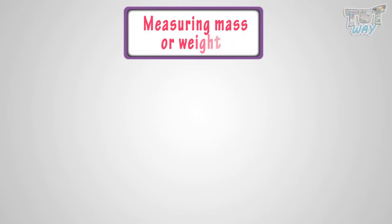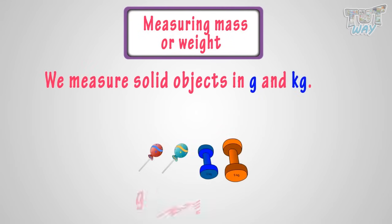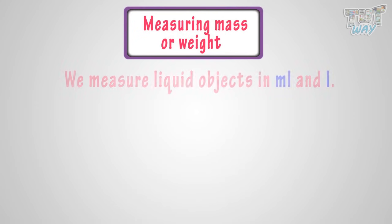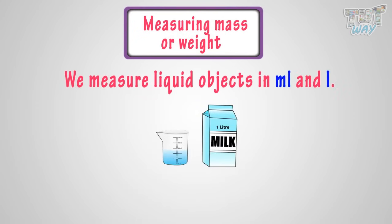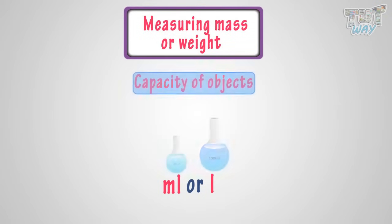For now, we will remember: We measure mass or weight of solid objects in grams or kilograms, and we measure weight of liquid objects in milliliters or liters. We also measure capacity of objects in liters. Now, let's learn more about mass or weight.